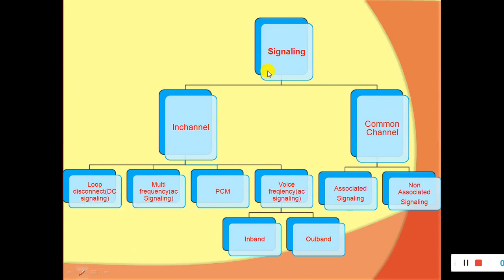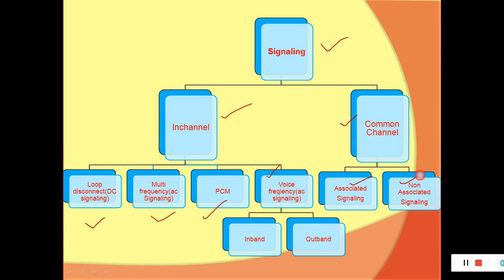This is the signaling techniques. We categorize or divide signaling into two sections or subdivisions: in-channel and common channel. This is a very important categorization. Further, in-channel signaling is divided into loop disconnected signaling, multi-frequency signaling, DCM signaling, and voice frequency or AC signaling. Common channel signaling is further divided into associated signaling, non-associated signaling. Voice frequency channel is further divided into in-band and out-of-band signaling.